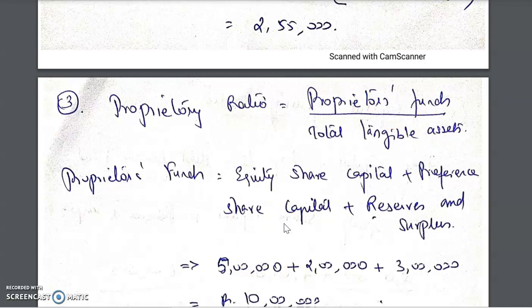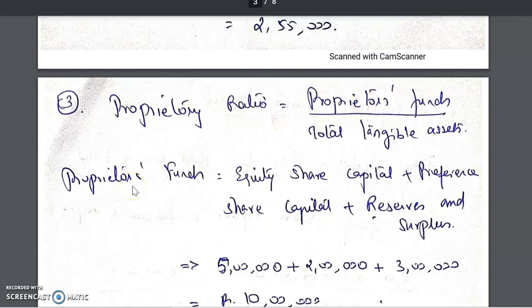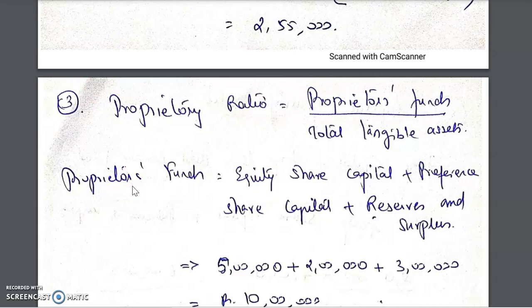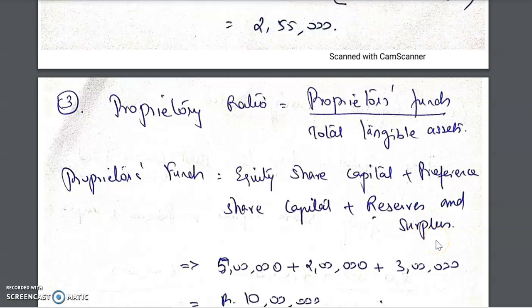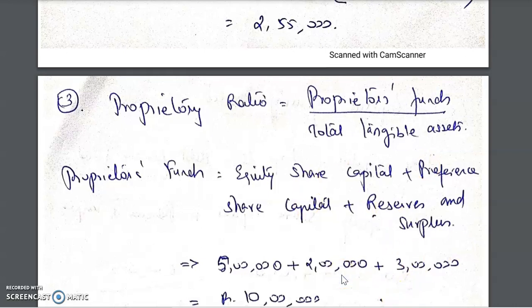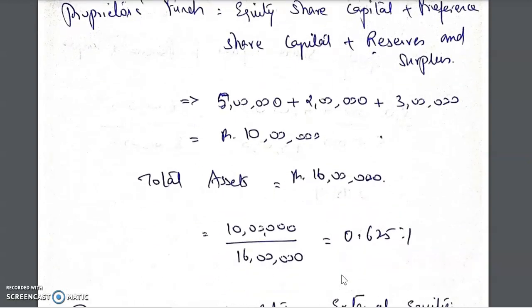Proprietary funds are equity share capital, preference share capital, and reserves and surplus — these are internal funds. Debentures or long-term bank loans are external funds and are not included. Adding the equity share capital, preference share capital, and reserves and surplus together gives proprietary funds of 10 lakh. With total assets of 16 lakh, the proprietary ratio is 10 lakh divided by 16 lakh, giving 0.625 is to 1.